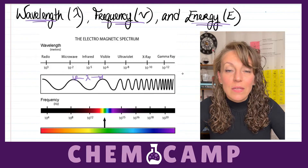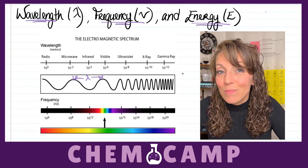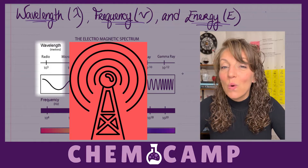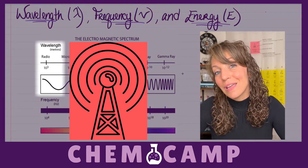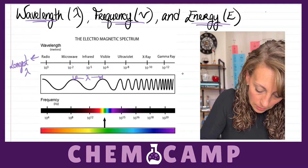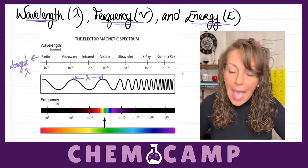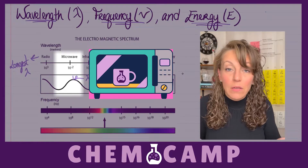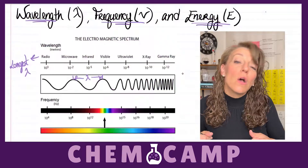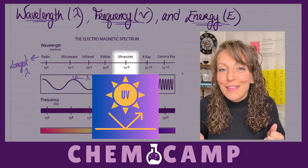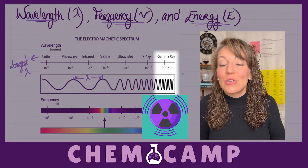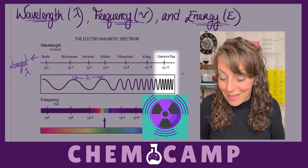The electromagnetic spectrum starts with radio waves, your longest wavelength, and works its way through microwaves, your visible spectrum, ultraviolet, all the way up to your gamma rays, which are your shortest wavelength.